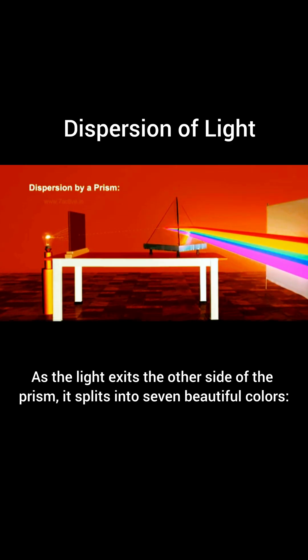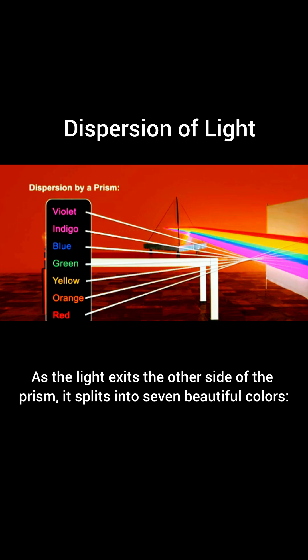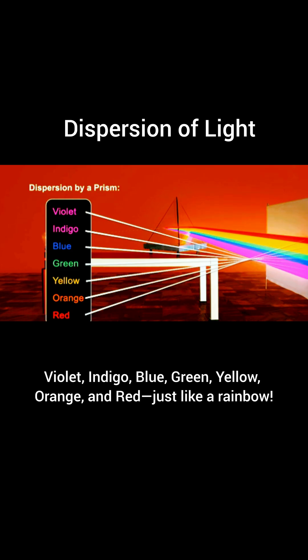As the light exits the other side of the prism, it splits into seven beautiful colors. Violet, indigo, blue, green, yellow, orange, and red, just like a rainbow.